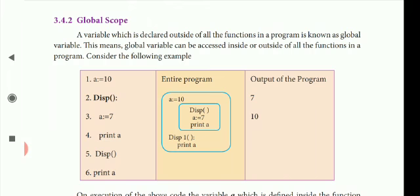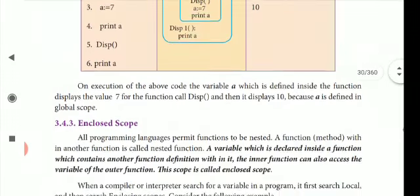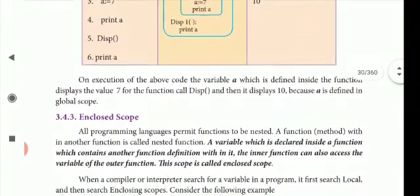Local scope is the opposite — very easy. On the execution of the above code, the variable a which is defined inside the function displays the value 7 for the function called display. And then it displays 10 because a is defined as global scope.